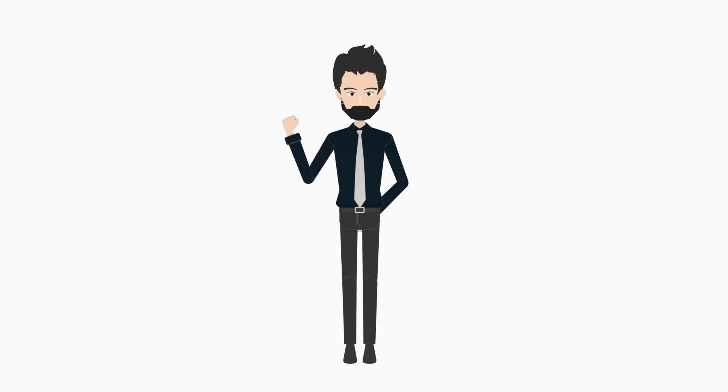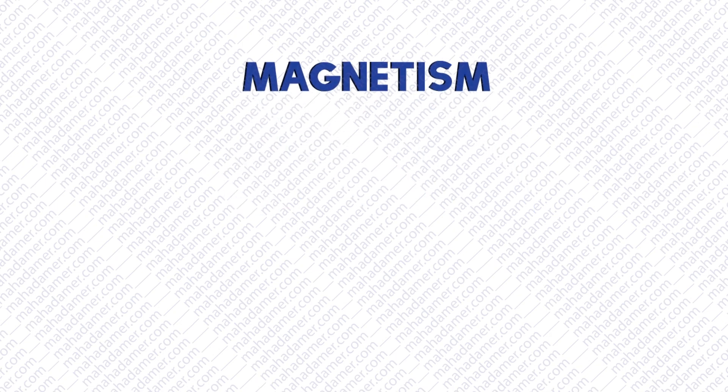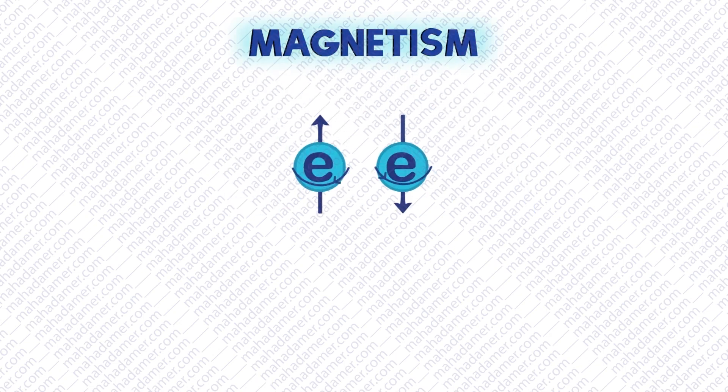Hello kids, this is Sir Mac. Today our topic is magnetism. Magnetism is due to spin of charges or movement of charges that causes a magnetic field.